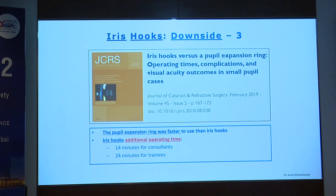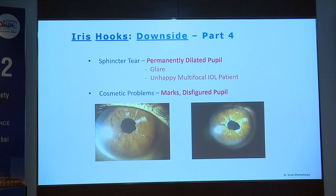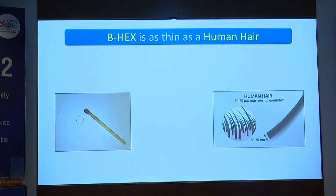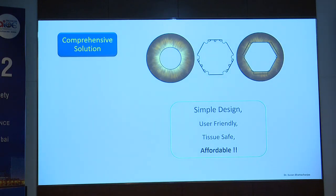There is a downside to iris hooks that is driving people toward pupil expanders: theoretical risk of infection with more incisions, iris sphincter tear, and rendering the pupil square — working within capsular bag axis means corners are wasted. The anterior chamber is shortened because the iris is at a more anterior plane, with risk of iris trauma and corneal endothelial damage. A 2019 study showed iris hooks took 14 minutes more for consultants and 24 minutes more for trainees compared to a pupil expansion device. With a multifocal IOL, a permanently dilated pupil leads to trouble.